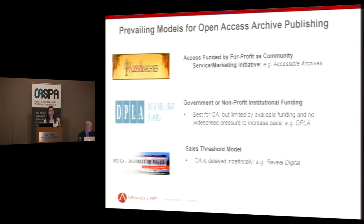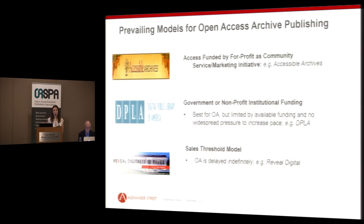We found another model as well, commonly known as the sales threshold model. It's essentially a crowdsourced approach to digitizing content, where an organization will identify content they want to make open, go to libraries or other funding institutions and ask people to donate — like a Kickstarter campaign. Once they reach a certain threshold and make enough money to undertake the project, they do so and the content becomes available. The drawback is that you don't have access to the content until you reach that threshold, so you could be waiting an indeterminate amount of time. All three models are out there and work really well in certain contexts, and we wanted to see if we could create another option as well.